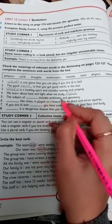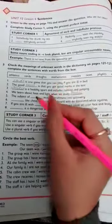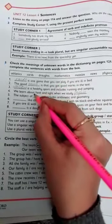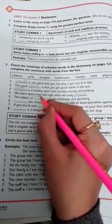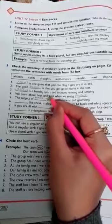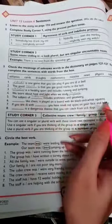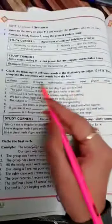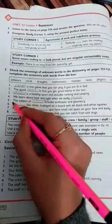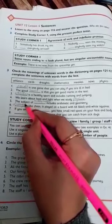The subject of blank includes arithmetic and geometry. In which subject do you study arithmetic and geometry? It is mathematics, so you are going to write here mathematics. Blank, like chess, is played on a board with 64 black and white squares. It is draughts. Draughts is a game just like chess which is played by two people.